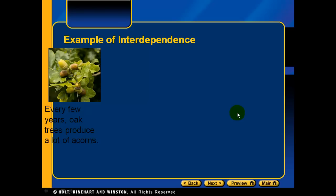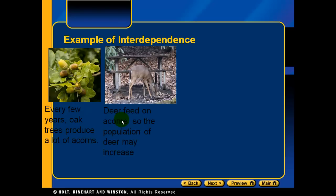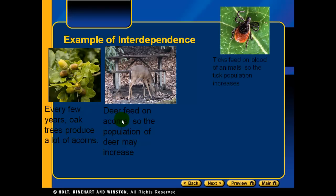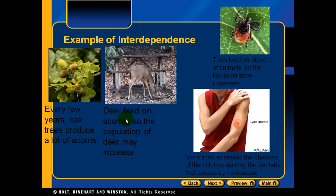Another example of interdependence: every few years, oak trees produce a lot of acorns, and deer feed on these acorns, so the population of deer may increase. If the deer population increases, ticks — which feed on the blood of those animals — also increase. If the tick population increases, that raises the chances of ticks transmitting the bacteria that causes Lyme disease. So basically, because oak trees produce more acorns, we could see more Lyme disease.